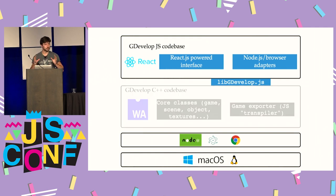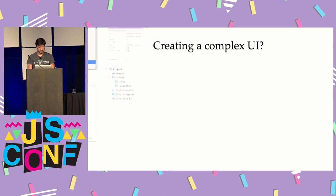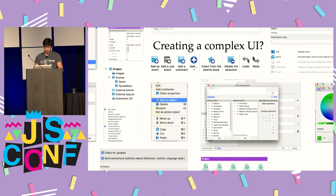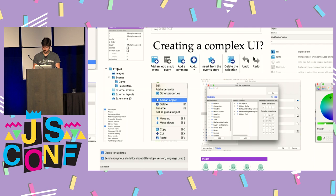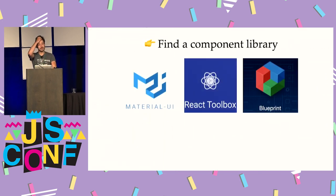Now we have something working in a browser. My next challenge was to create an interface on top of it as good or even better than what I used to do in the native C++ world. In my case I was using React, and I had to remake all these examples: context menus, trees of objects, color pickers, lots of forms, buttons, property grids — all of these in the browser. The first advice I have is to find a component library, for example Material UI, React Toolbox, or Blueprint.